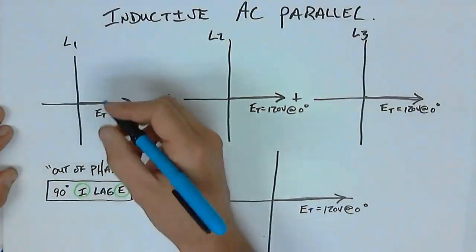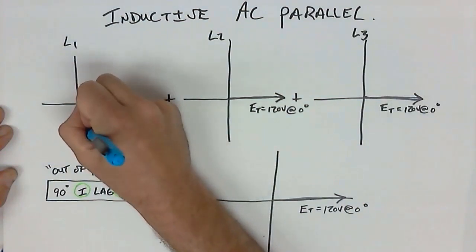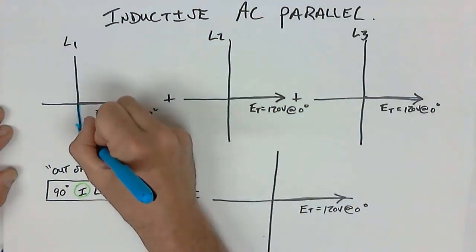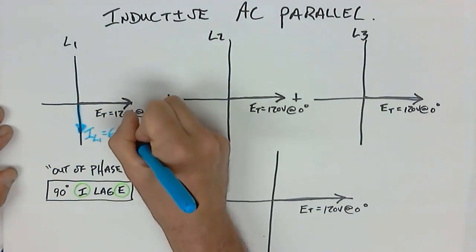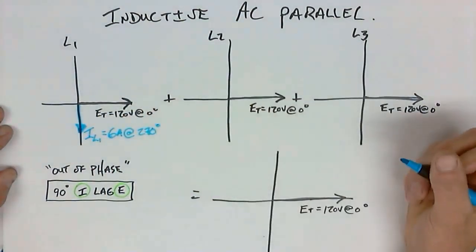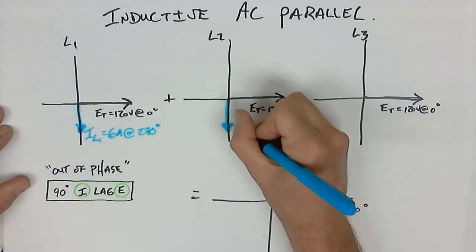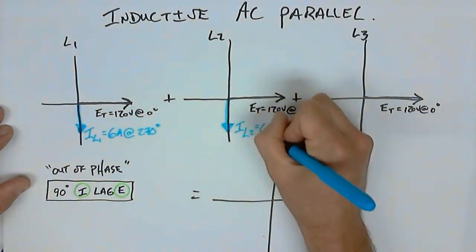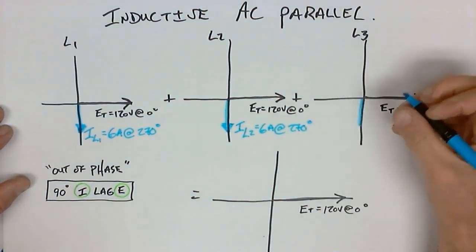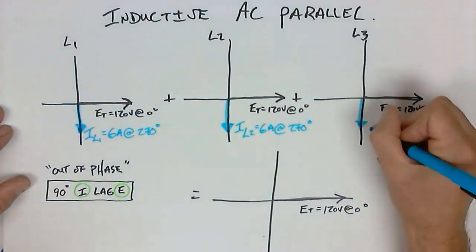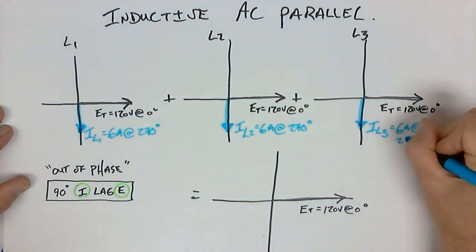Since the reference has changed, the current value for an inductor is now sketched at the bottom. So IL1 is 6 amps at 270 degrees. IL2 is 6 amps at 270 degrees. And IL3 is 6 amps at 270 degrees.